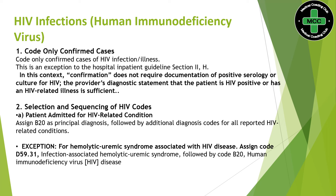The exception to this sequencing guideline is hemolytic uremic syndrome associated with HIV disease. When the patient's chief complaint is uremic syndrome, which is also associated with HIV, you should not consider B20 as a primary code. Instead, code D59.31 as primary diagnosis, followed by B20. For all other conditions associated with HIV, if the patient is admitted for an HIV-related condition, code B20 as primary and the associated condition as secondary.